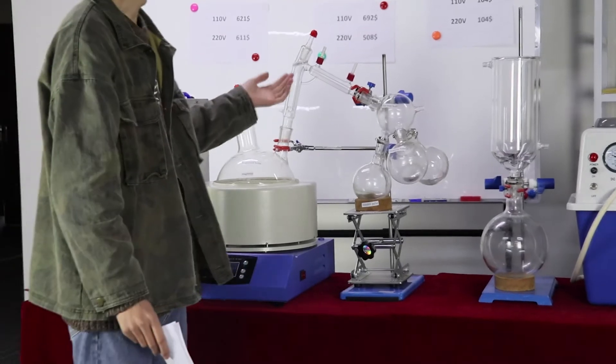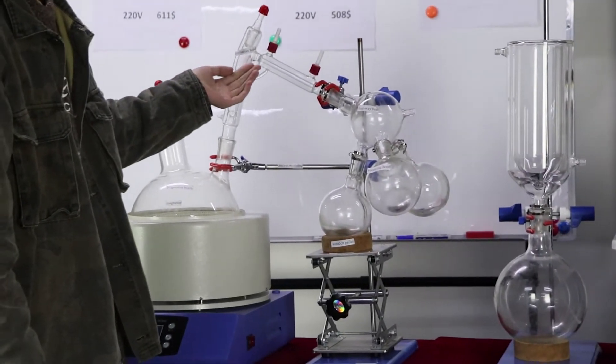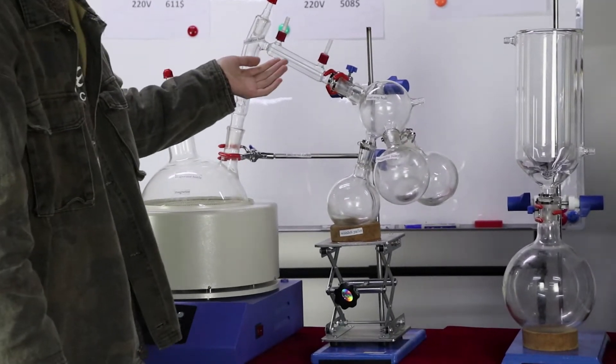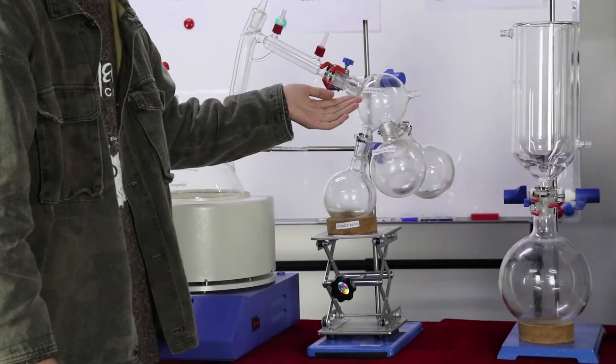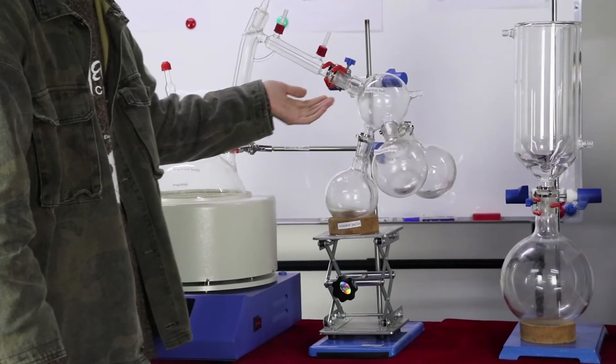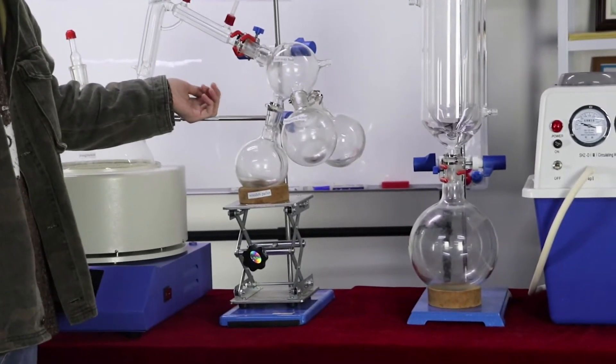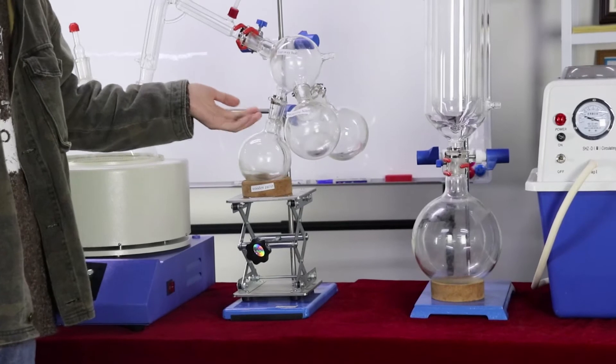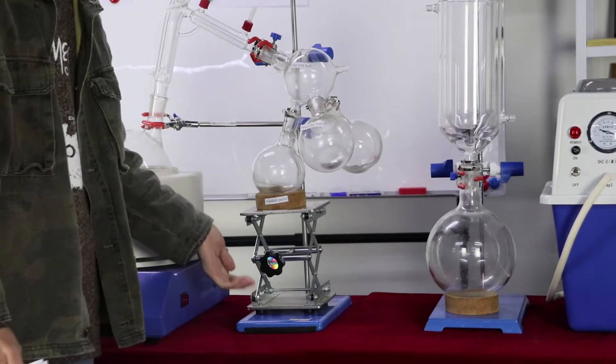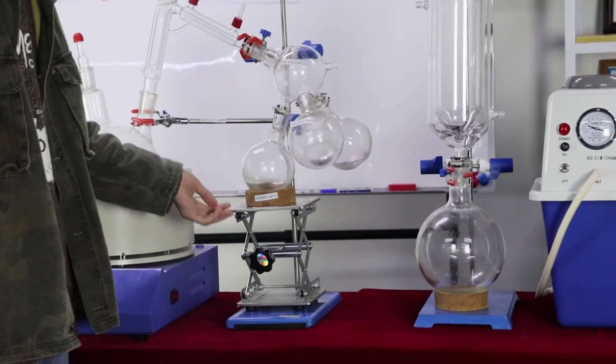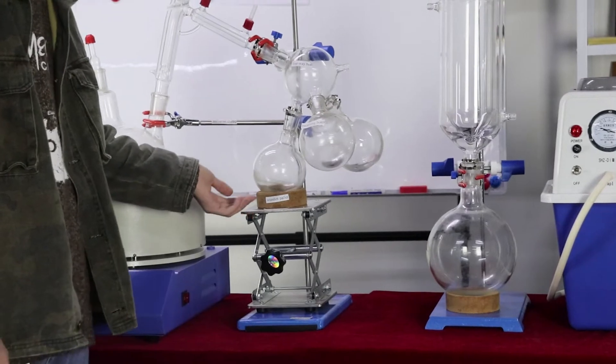Then, this is the distillation head. Then, this is the condenser. And this is the 4-way bottle. It connects the 3-way bottle. This is the iron platform and the wooden pallet, lifting platform.